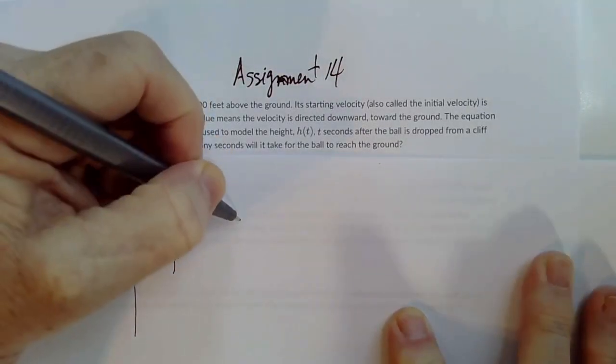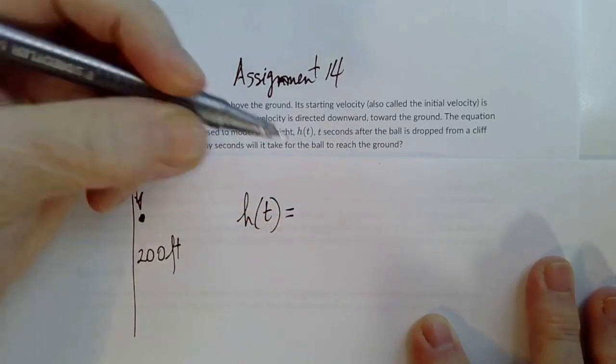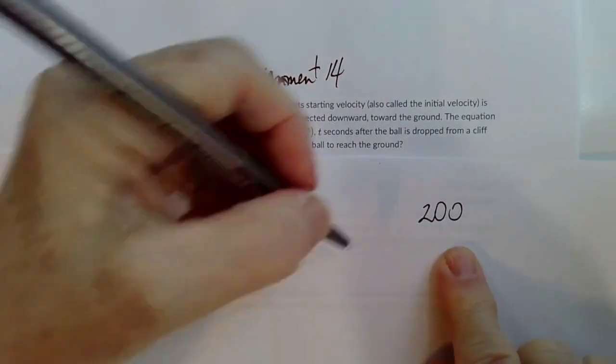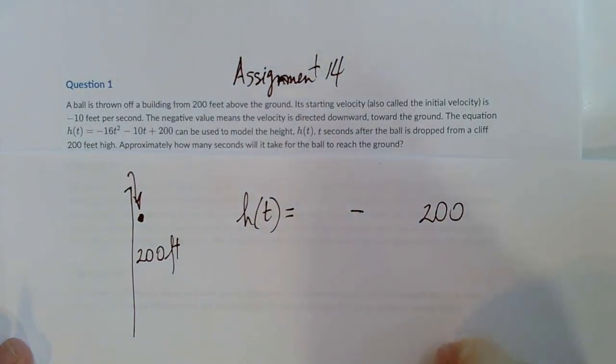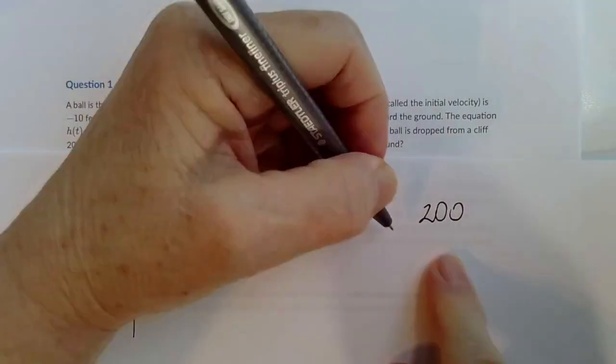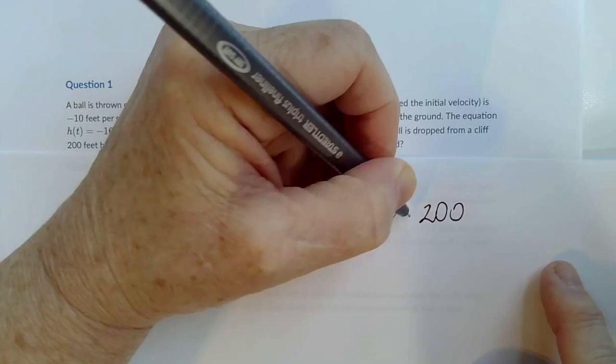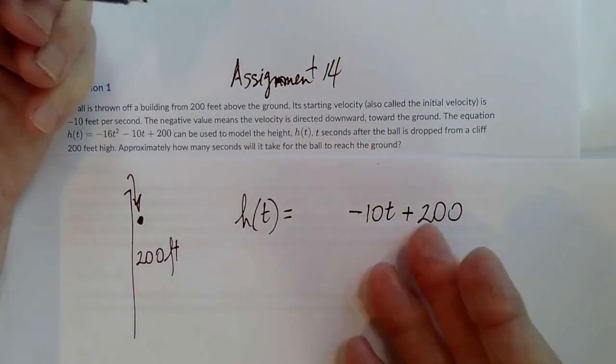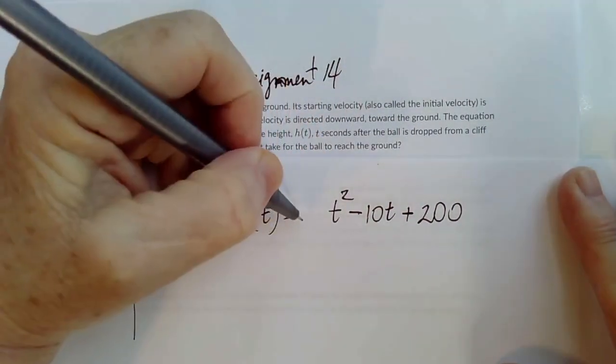So we have that the height of the ball with respect to time will be the initial height, which is 200 feet, minus, it's thrown down. So we have an initial velocity of 10 feet per second, but it's directed downward, so it's negative.